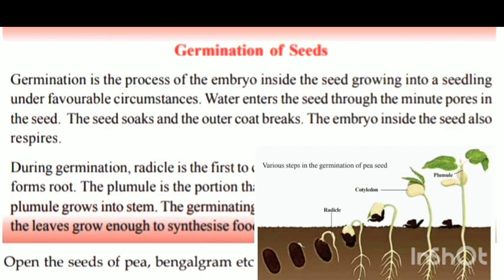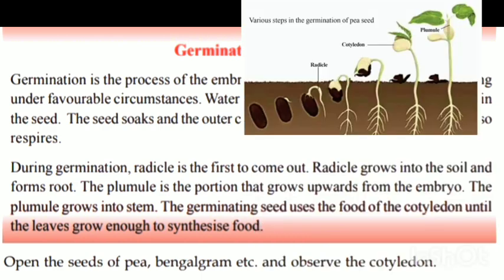The embryo inside the seed also respires. During germination, the radical is the first to come out. The radical grows into the soil and forms roots — the radical becomes the root.